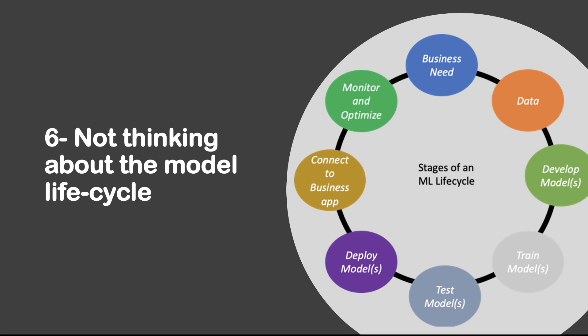The sixth mistake is not thinking about your model as part of a lifecycle. This is widely disregarded by data scientists, probably because more than half of projects don't make it to production and stay at the proof-of-concept level. A machine learning lifecycle starts from the business needs and goes through data extraction and collection, model building and training, testing, and finally deploying to the client infrastructure and monitoring it. Having this global picture in mind can help you make the right choices early on — for example, if you know the client infrastructure is limited, you may think from an early stage about developing less complex models to make deployment easier.